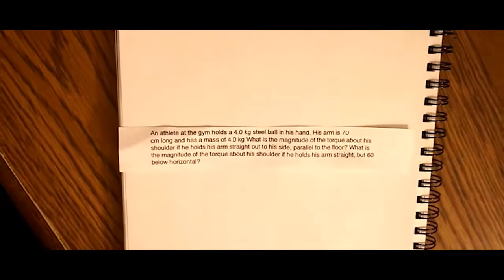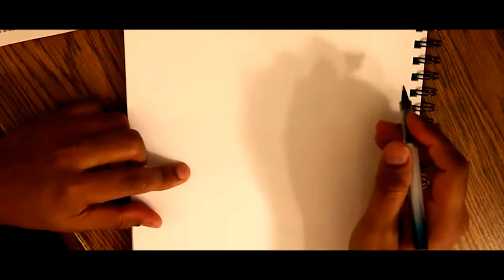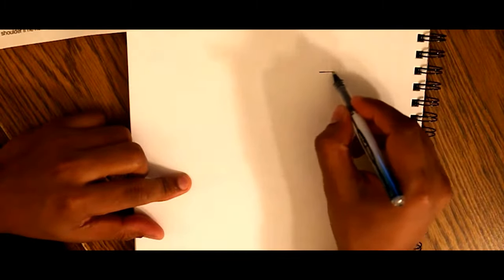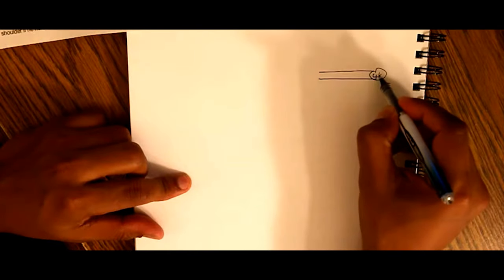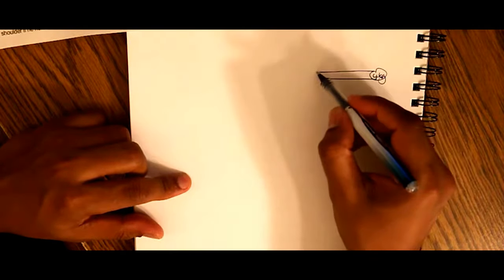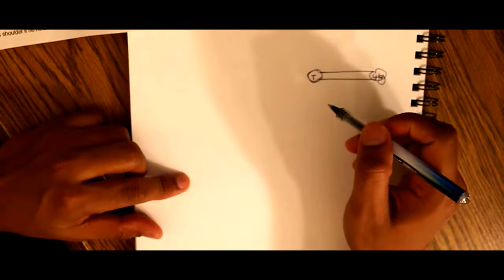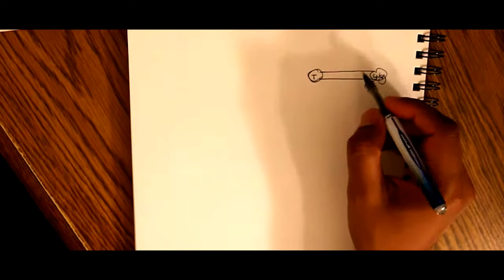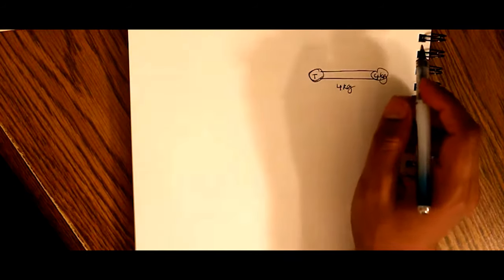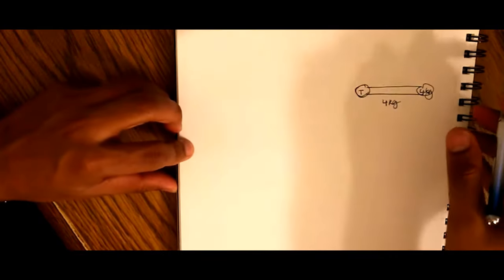So let's get right to it. Let's draw what this athlete is doing. This athlete is extending his arm and holding out a steel ball of 4 kg. We're asking, what is the torque about his shoulder? And we are told that his hand weighs 4 kg. So there are two torques going on here. We have torque 1 and torque 2.